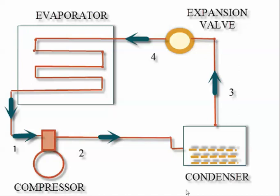The main parts of a vapor compression refrigeration system are: first, a compressor; second, a condenser; third, an expansion valve; and fourth, an evaporator.